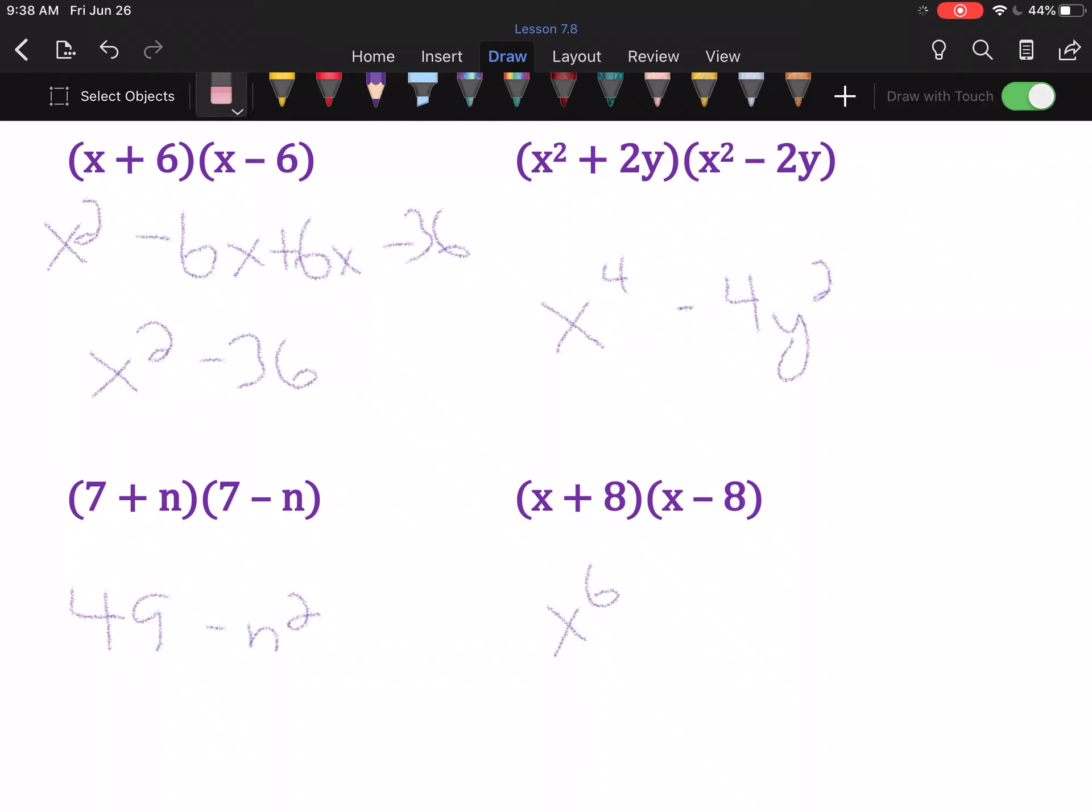x times x is not x to the sixth. Silly me. It's x². Outer and inner will cancel. 8 times -8 is -64.